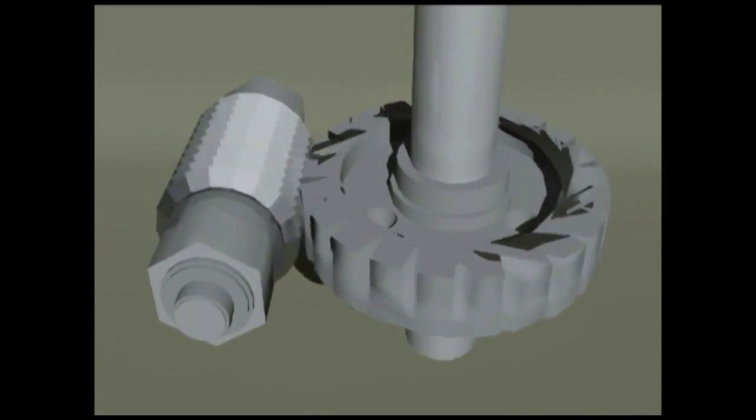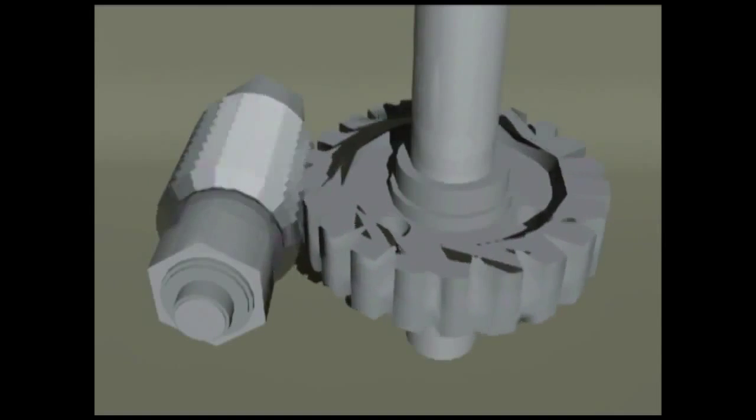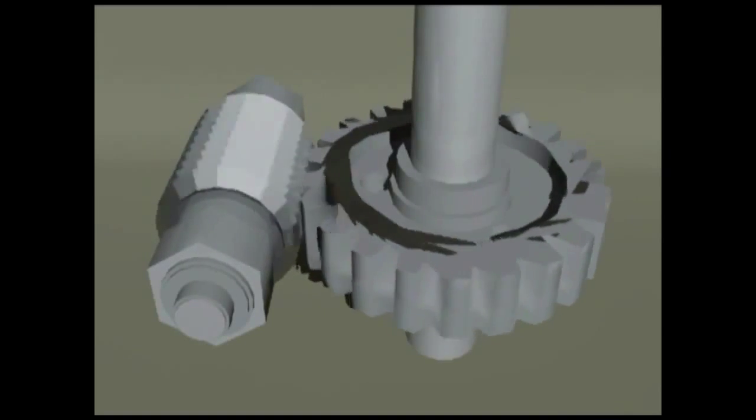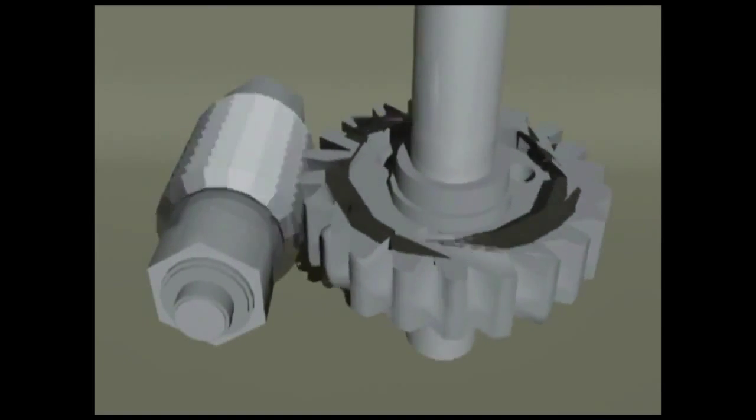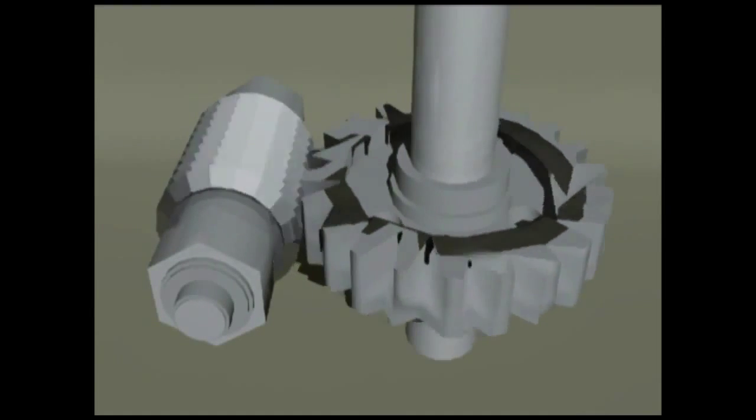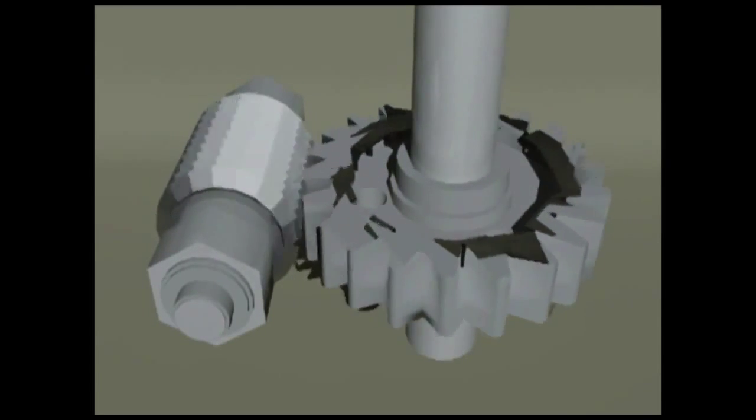If the hopper would cut the full depth of the teeth in one shot, the cutter would chip. So the gear keeps turning around and around again as the hopper cuts a bit more with each pass, until the teeth are the right depth.